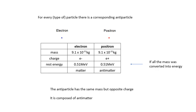For example, the electron — there is another type of particle called a positron, which is a positive electron. The antiparticle has the same mass but opposite charge. The mass of an electron, 9.1 times 10 to the minus 31 kilograms, is the same as the mass of a positron. Electrons are negative; positrons have plus 1.6 times 10 to the minus 19 coulombs.